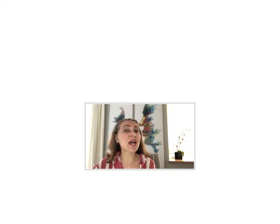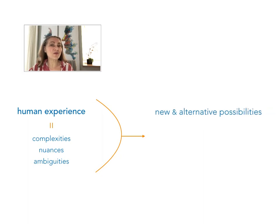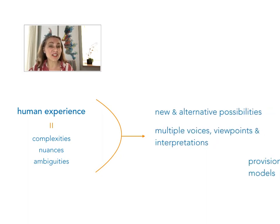Influenced by memory and hindsight, and framed by multiple perspectives and viewpoints, narrative inquiry has limitations in regard to presenting objective and generalizable truths and identifying common themes that might feed taxonomies and frameworks. But these were never its goals. Rather, narrative inquiry embraces the complexities, nuances, and ambiguities of human experience, seeking new and alternative possibilities, multiple voices, viewpoints, and interpretations, and provisional truths and models for how things work.